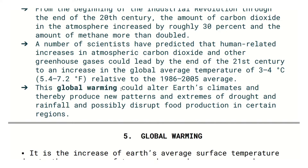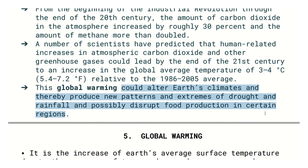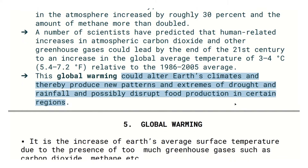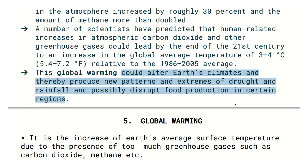This global warming could alter earth's climate and thereby produce new patterns of extreme drought and rainfall, and possibly disrupt food production in certain regions. Global warming leads to temperature increase, climate change, changes in rainfall, and impacts on food production.